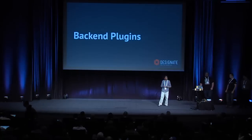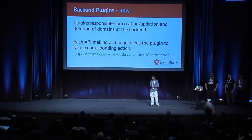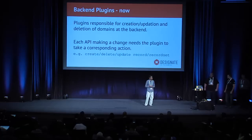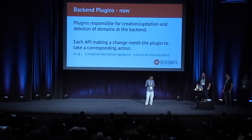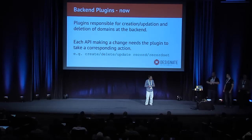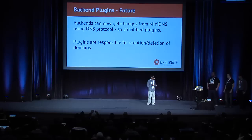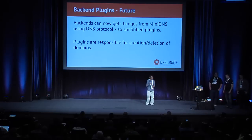Pools also simplifies back-end plug-ins considerably. Currently, back-end plug-ins are responsible for all operations that change data — for each API operation, you need a corresponding operation in the plug-in. For example, if you delete a record set for a BIND plug-in, you'd need to modify the zone file and do a corresponding RNDC call. Going forward with pools and MiniDNS, the back-ends can get all changes from MiniDNS. Since MiniDNS talks the DNS protocol, it doesn't matter what back-end you're using — as long as it talks DNS protocol, it can get changes from MiniDNS using AXFR. The plug-ins are then just responsible for the creation and deletion of zones.